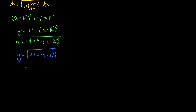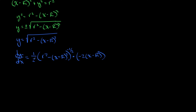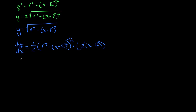Now that we have y, we're after the derivative, so let's take the derivative with respect to x. This is going to be equal to one half using the power and chain rule. So we have one half times the quantity (r² minus (x minus capital R)²) to the negative one half power, times the derivative of the inside. Remember, r is a constant, so the derivative of the inside is negative two times (x minus capital R). The twos cancel, and so dy/dx equals negative (x minus R) over the square root of r² minus (x minus capital R)².